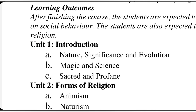In Unit 1 you have to study: A) nature of religion and significance of religion and evolution of religion; B) magic and science and its connection with religion — the relation of magic with religion and science with religion; C) sacred and profane.